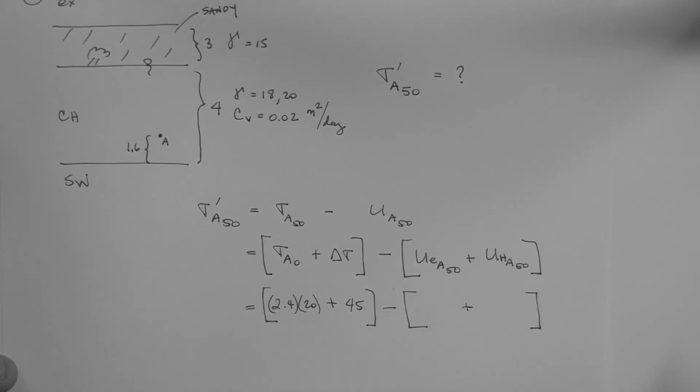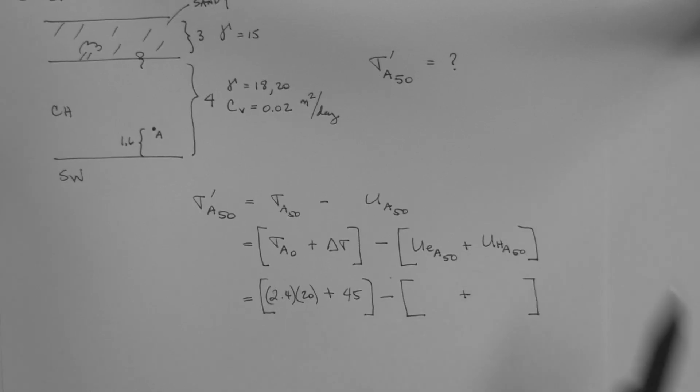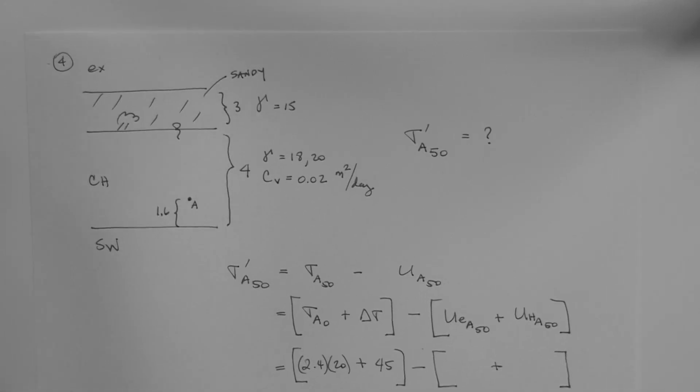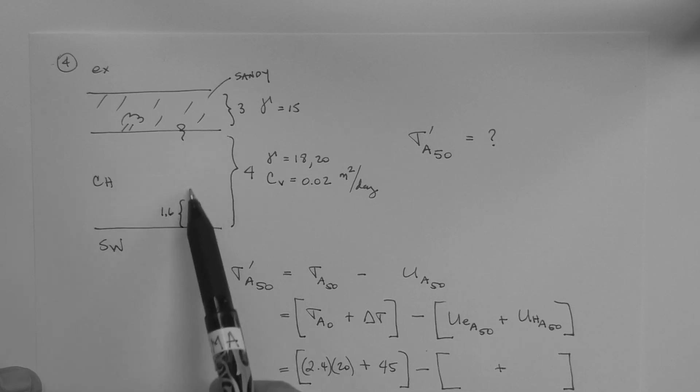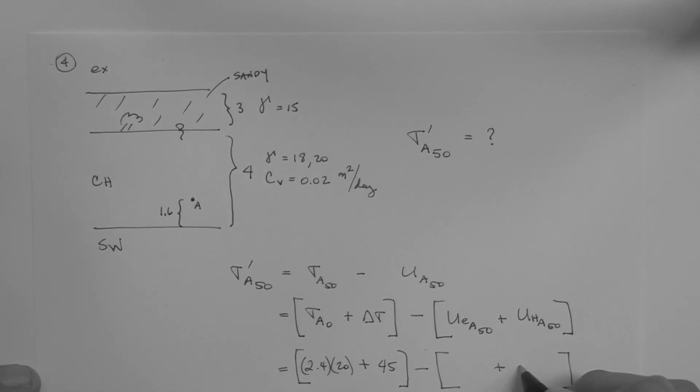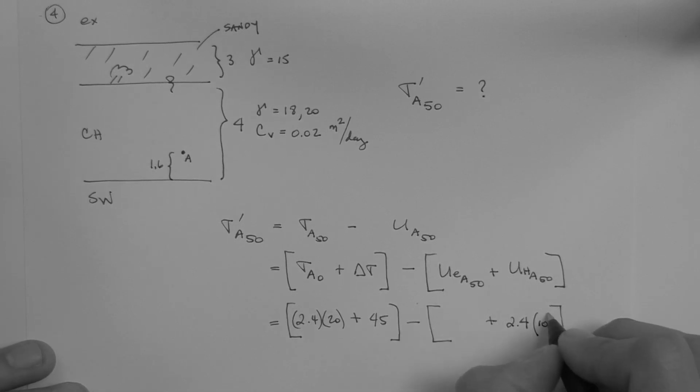But in any case, this is the value that we're looking for right now, and that is the hydrostatic pore pressure at time equals 50 at point A. 50 days. So at 50 days after fill placement, it is assumed that the water table is still at the same location. And so that distance is 2.4 meters. That is the hydrostatic pressure head. That multiplied by 10 kN per meter cubed for water, is the hydrostatic pore pressure at point A at time equals 50 days.